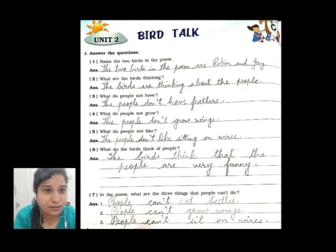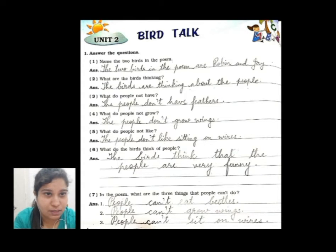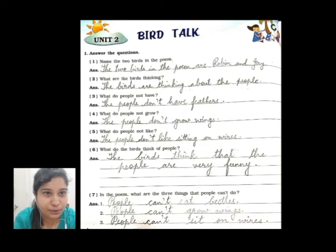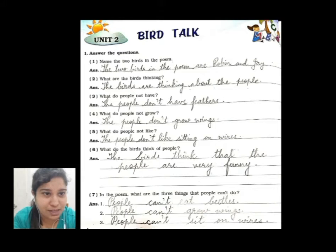Question number five: what do people not like? The people don't like sitting on wires. Question number six: what do the birds think of people? The birds think that the people are very funny.